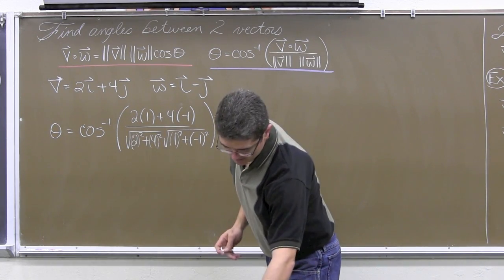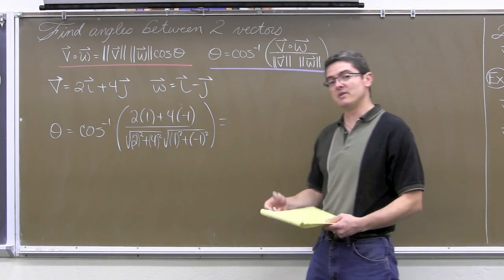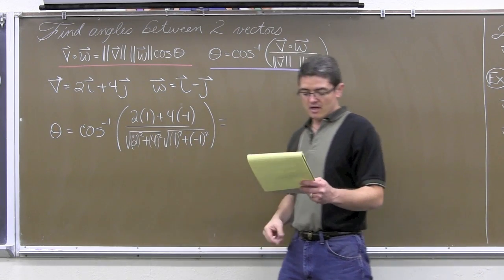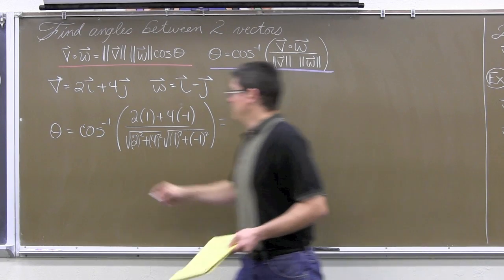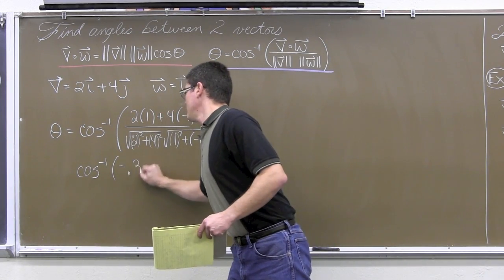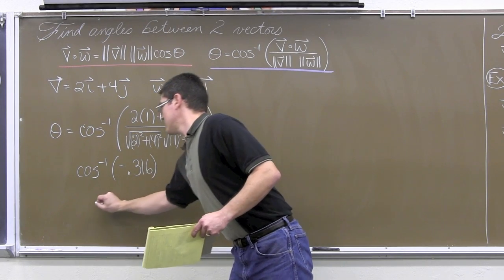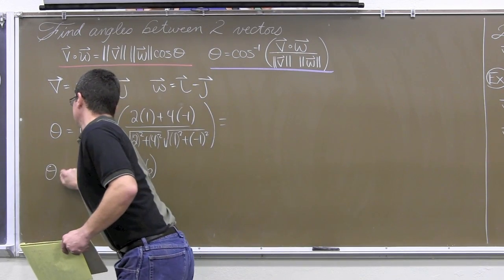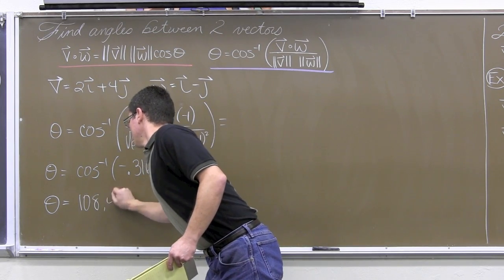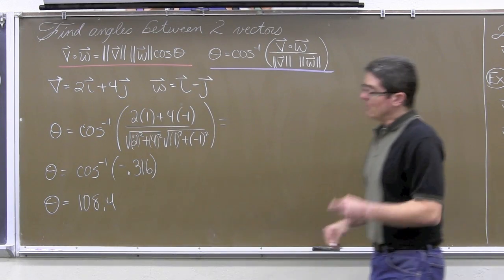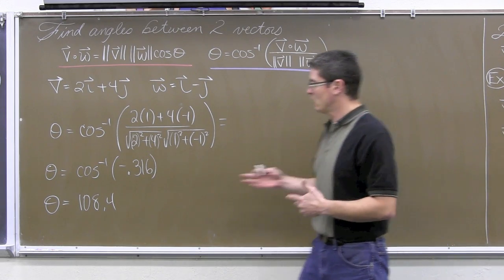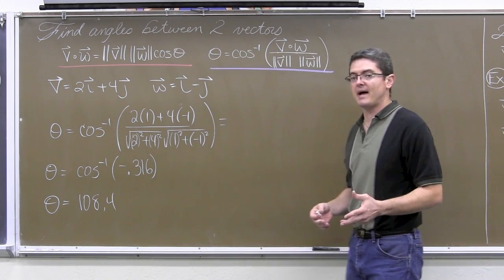So, let's not let our fancy calculators give us the wrong answer because it understands the difference in that notation. Now, when you get all this typed into your calculator, there really isn't much more to this. But, it is going to come out to be the inverse cosine of negative 0.316, which comes out to a theta value equal to 108.4.